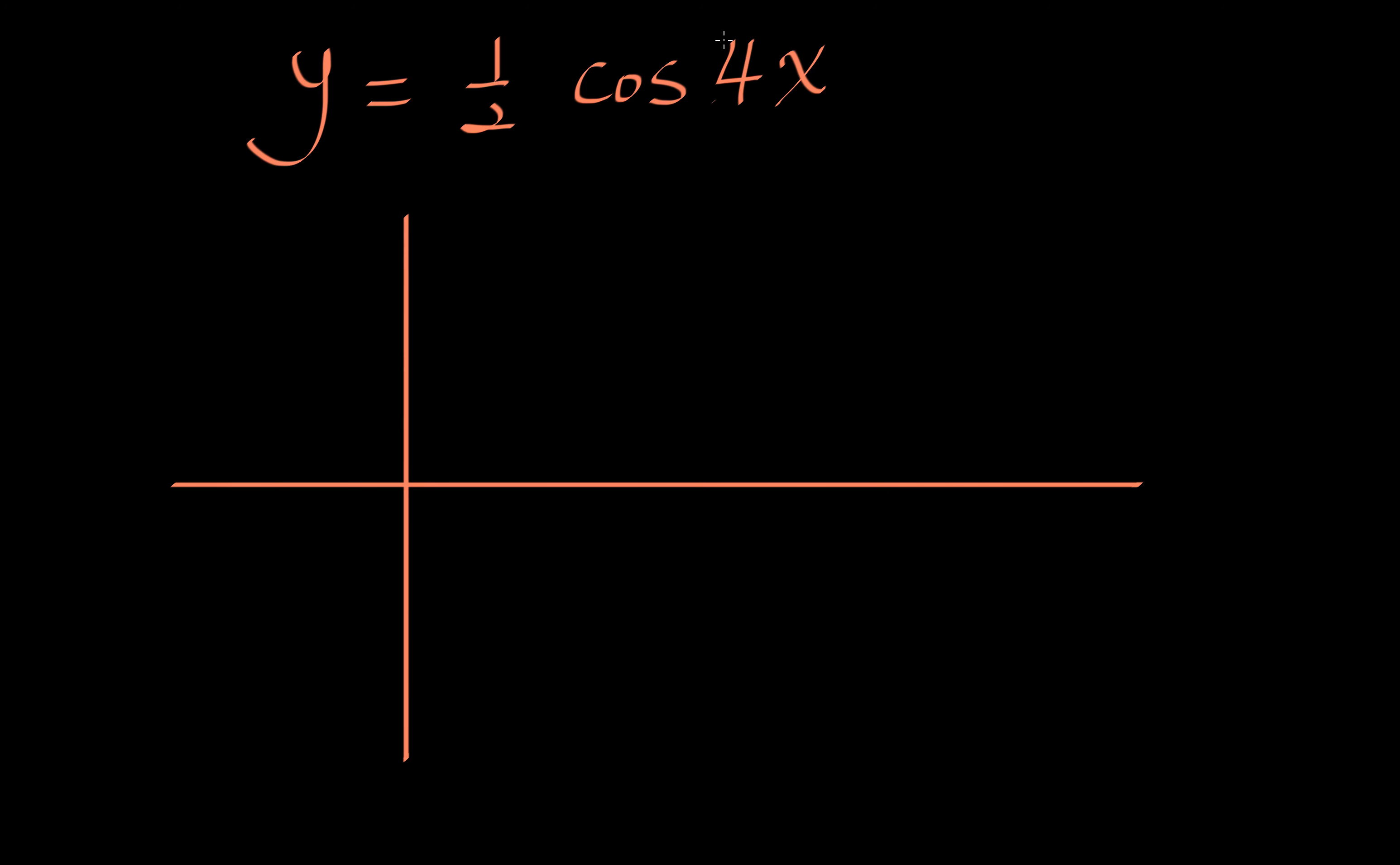And then since our B term is 4, so our period is 2π over B which is 4 in this case. I'm going to write 4 here which reduces down to π over 2. So that's our period, instead of 2π now it's π over 2. Then we're going to cut that in half, multiply by one half, or π over 4. Cut in half again, that's π over 8. Then you know how I showed you, this is 1π over 8, 2π over 8, so this must be 3π over 8.